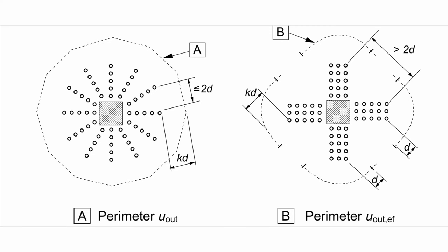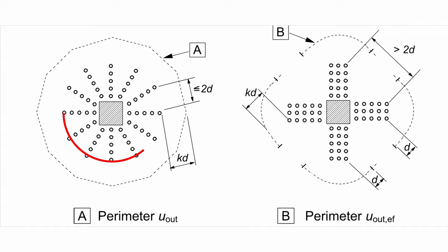Looking at examples of punching shear design with stud rails, you can see successive rings as you go further out from the column — bigger and bigger rings throughout the structure. As these rings go further out, you need to keep re-checking, because as per Eurocode or ACI, you must check each ring until you reach a point where the concrete alone is able to withstand the forces in RC form without the reinforcement. Just be careful to ensure you are designing those successive rings as you go out.